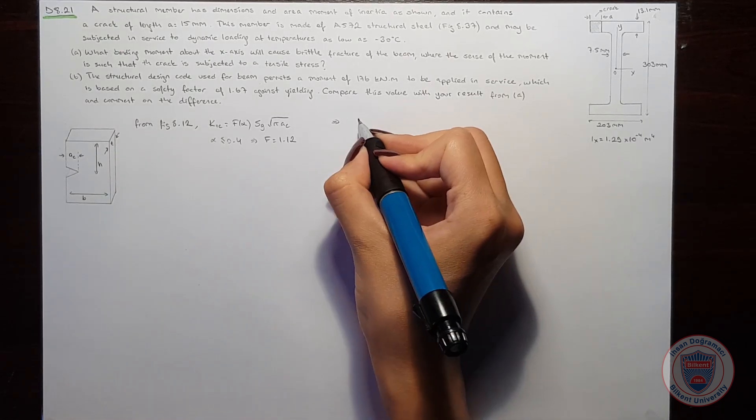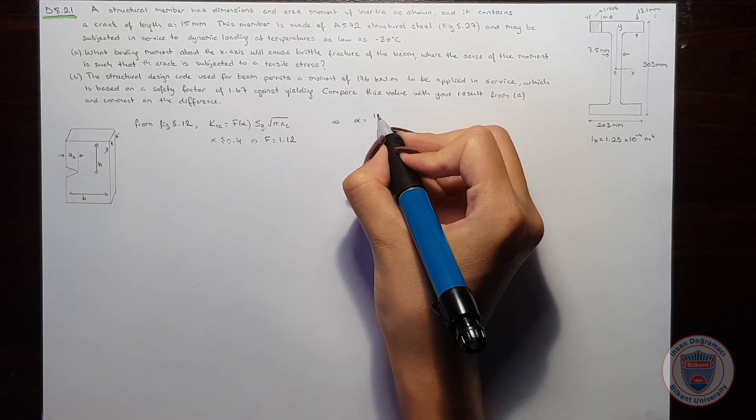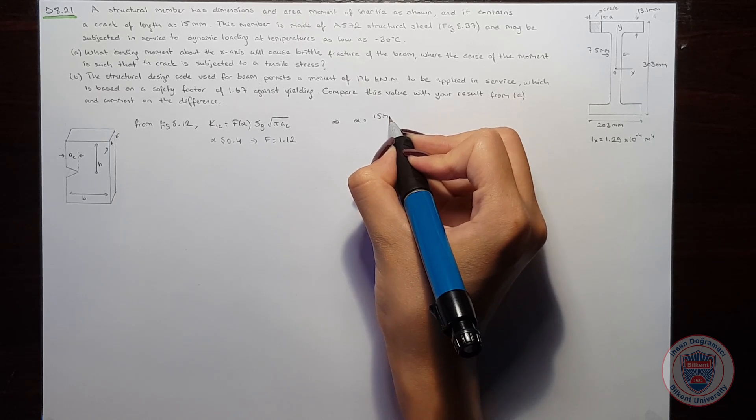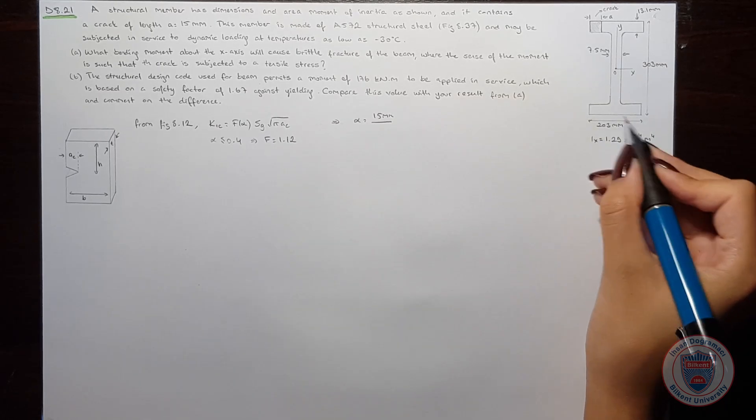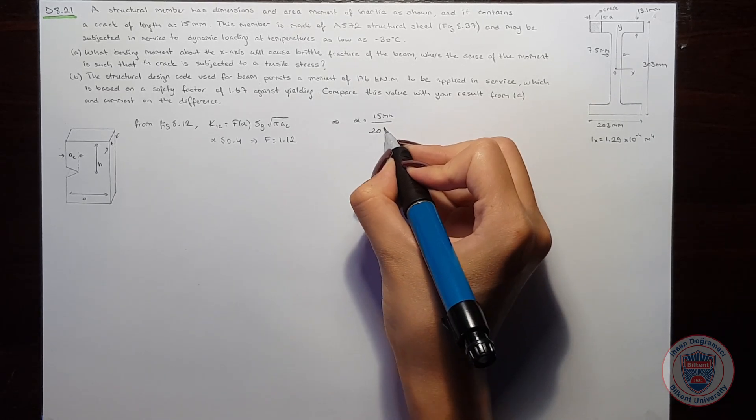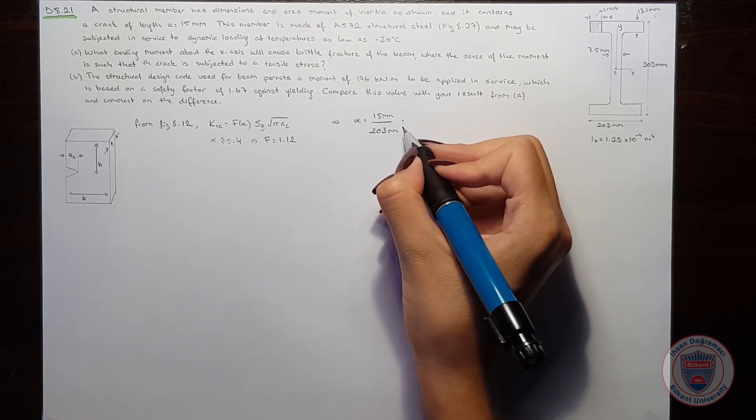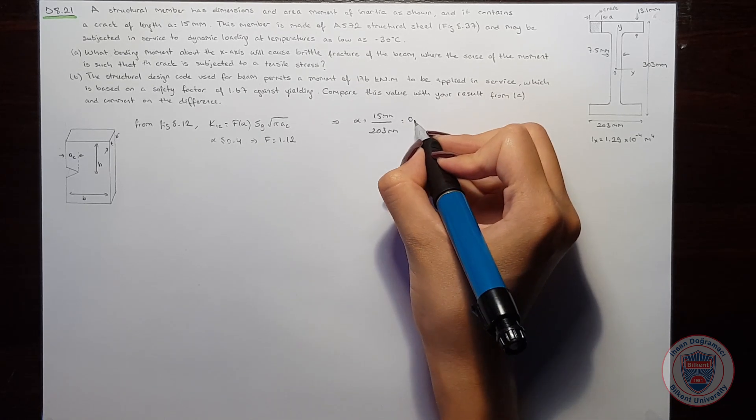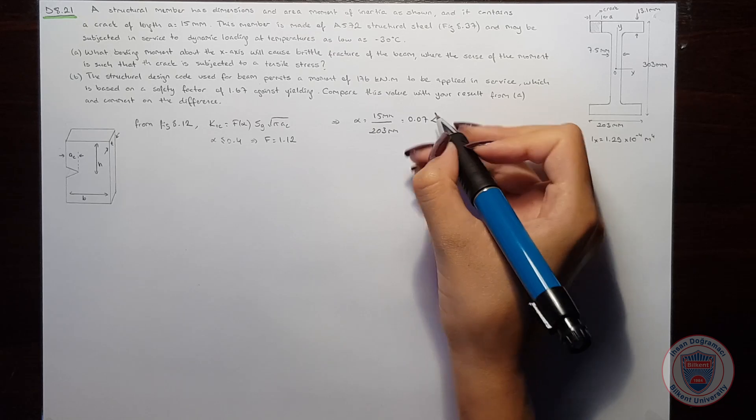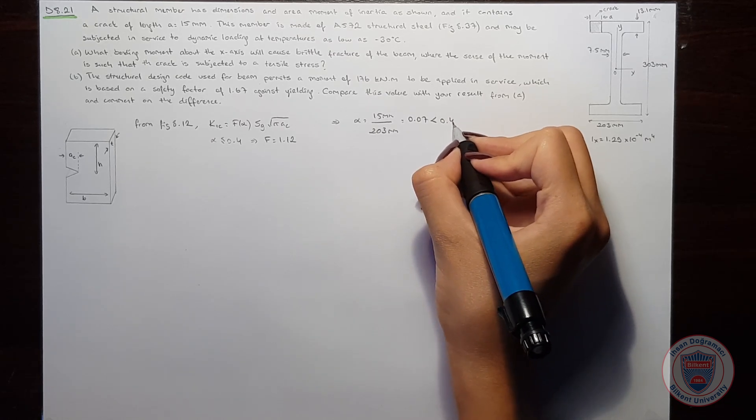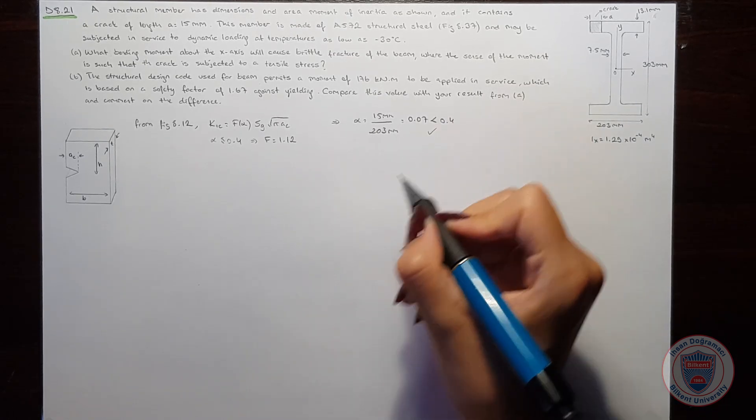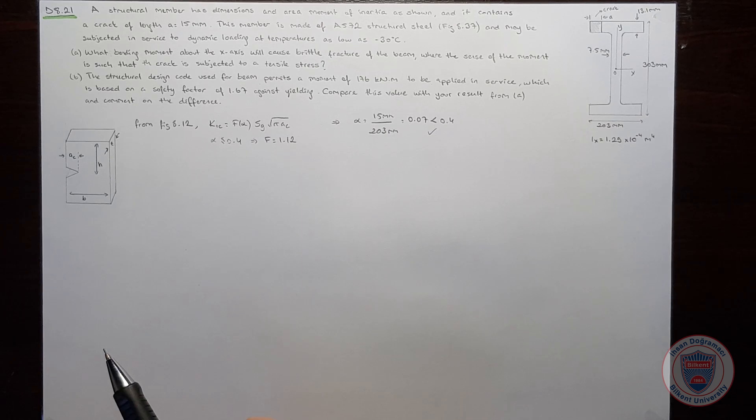In our case, alpha will be equal to 15 mm over 203 mm, and it will be 0.07, which is smaller than 0.4. So we can use this assumption.